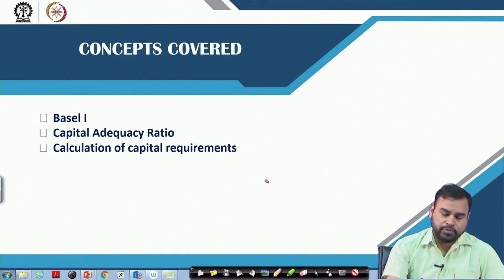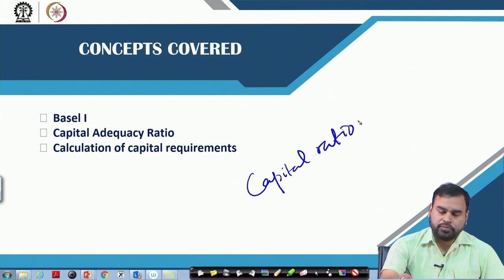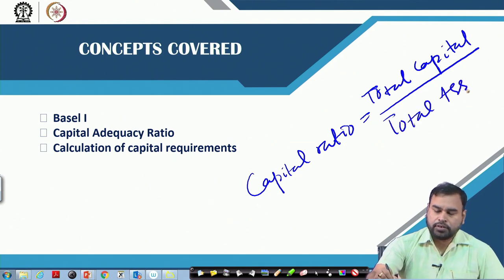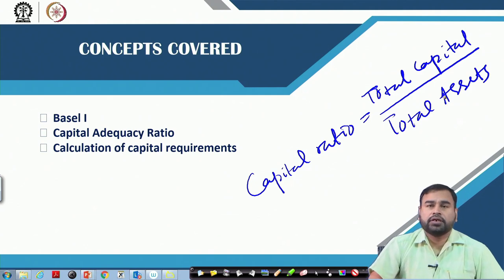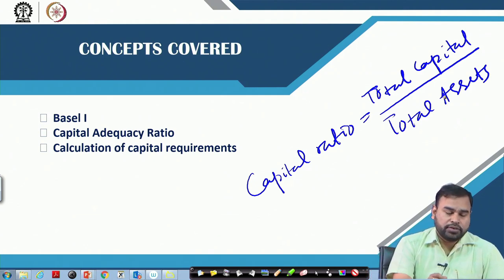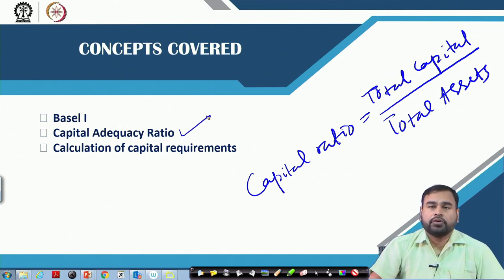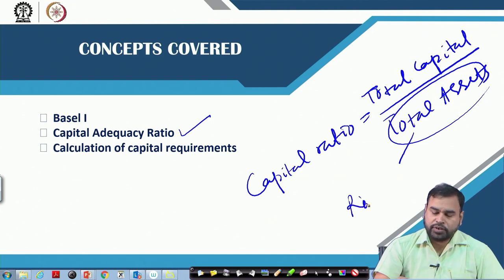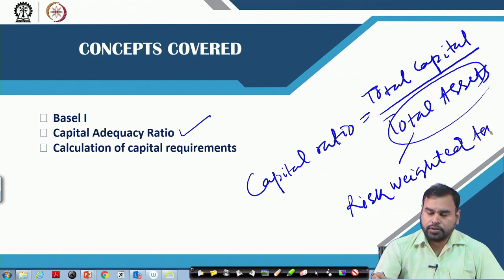Previously, we were talking about the capital ratio — total capital, comprising both debt and equity, divided by total assets. But according to the Basel norms, they give importance to the capital adequacy ratio, where instead of total assets, we talk about risk-weighted assets.